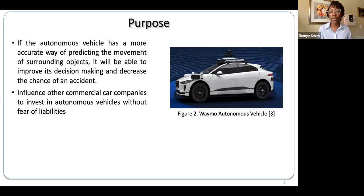Therefore, if the autonomous vehicle is able to make accurate predictions of the movement of other traffic participants, it could improve its decision making and decrease the chances of an accident, which will alleviate all three of those consumer concerns.